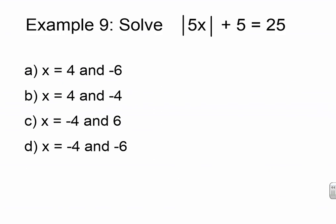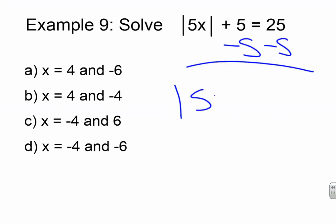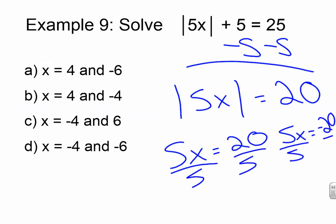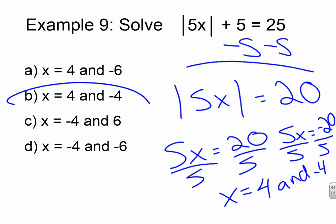Pause the video now as you try example nine. Press play to go over your answer. Subtract 5. The absolute value of 5X equals 20. Now it looks so nice, I write it twice: 5X equals 20, and 5X equals negative 20. Divide both sides by 5. X equals 4 and X equals negative 4. So that's answer B.